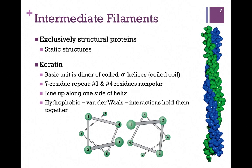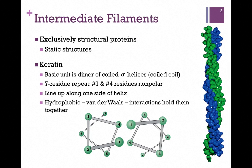The first we'll look at is keratin. The basic unit is a dimer of coiled alpha helices. Each monomer is an alpha helix, and we wrap them around each other to form what's called a coiled coil, and you can see that on the far right of your screen here. Each of those alpha helices is either in blue or green. An interesting thing about the primary structure is that there's a repeat of seven similar residues throughout the length of the chain, and the first and fourth residues are non-polar.